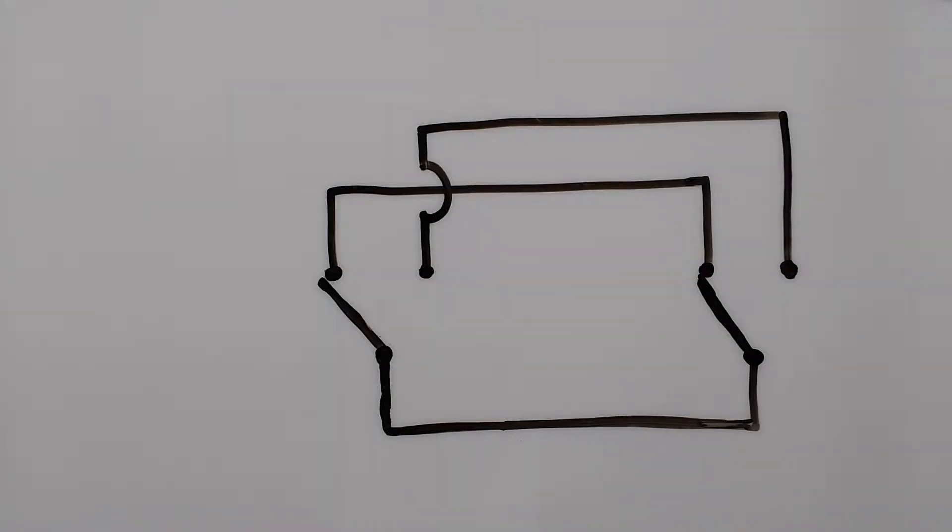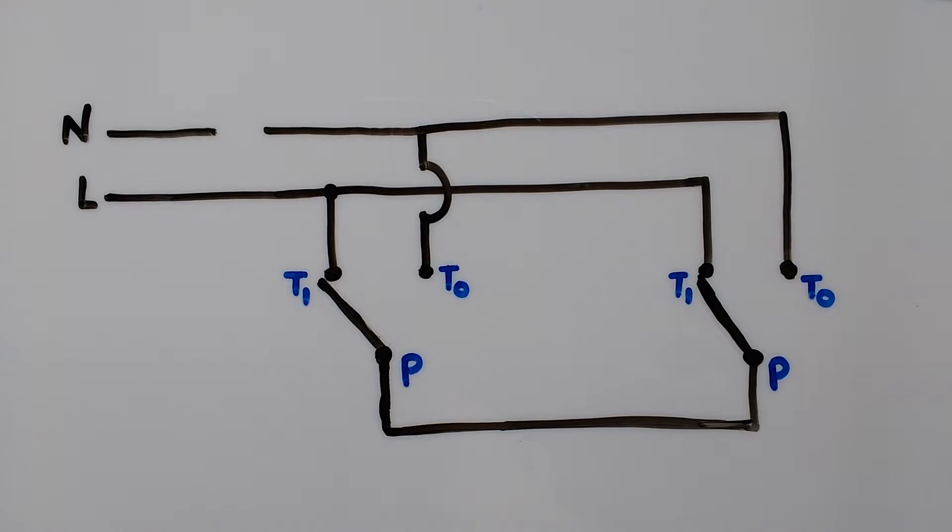There are multiple ways to implement two way AC switching. One of them is to short poles and throws of two switches. Then we take either live or neutral wire and connect it to one of the terminals and other wire connects to remaining terminal through a load, for example a bulb.